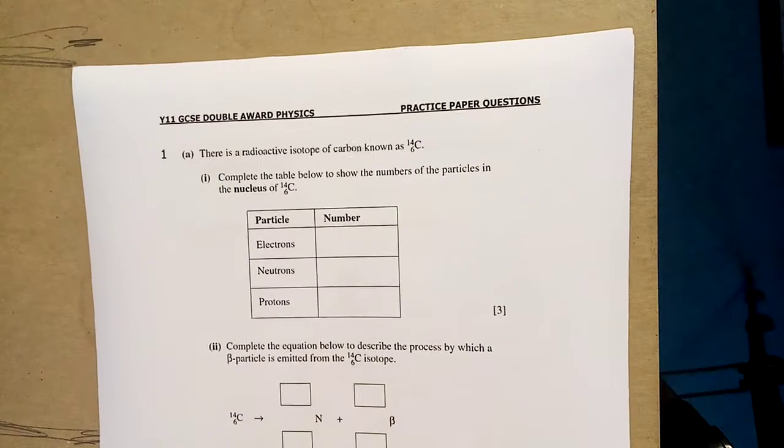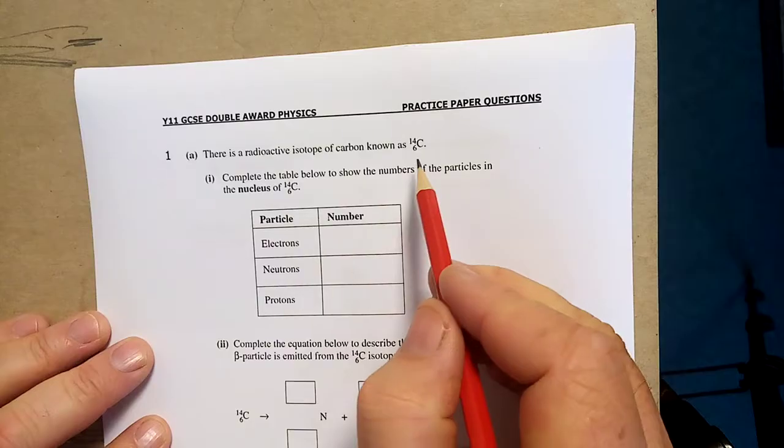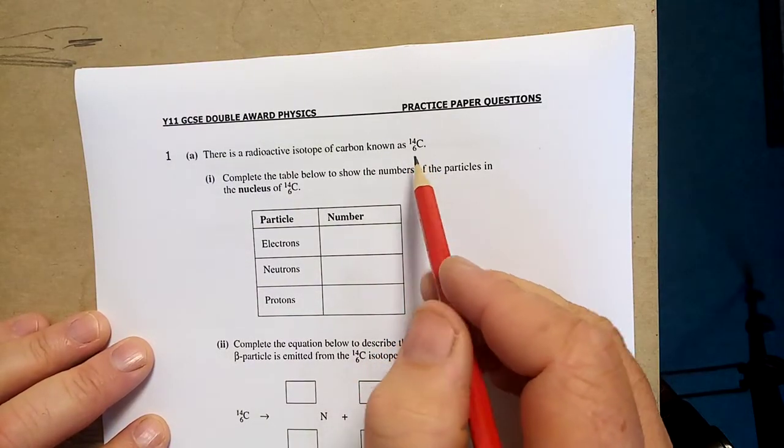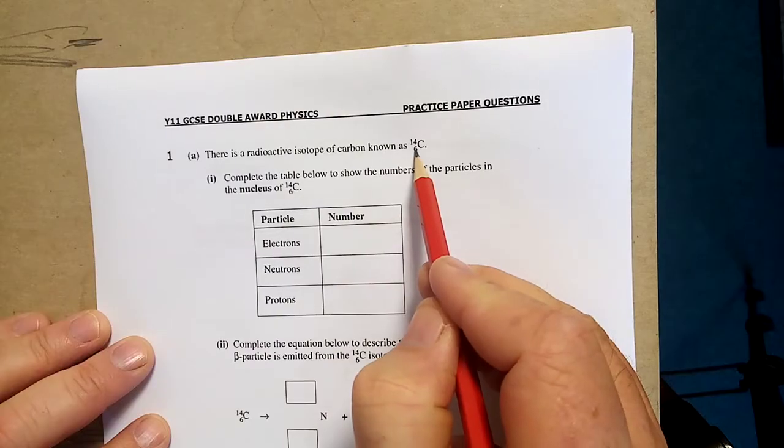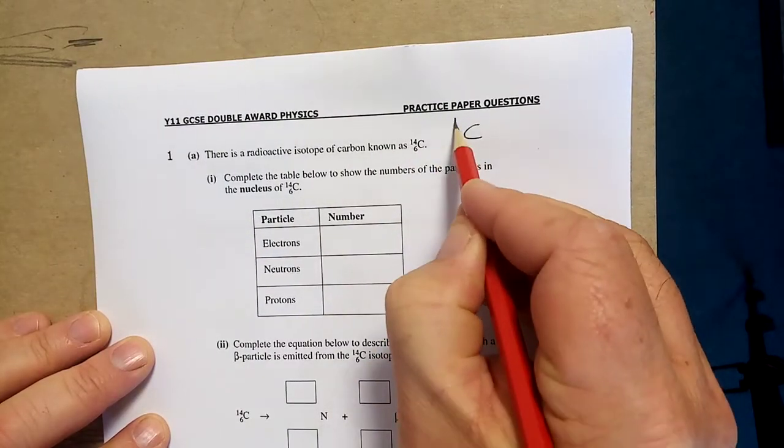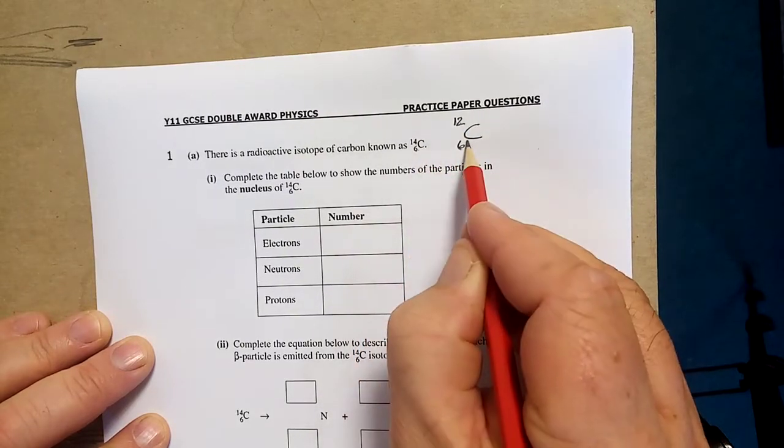So again, it says there's a radioactive isotope of carbon-14. This is the same. Remember we talked about the isotopes. Same atomic number, different atomic mass. The bog standard carbon and the isotope is that one. Same atomic number, different atomic mass. So this is an isotope of that.